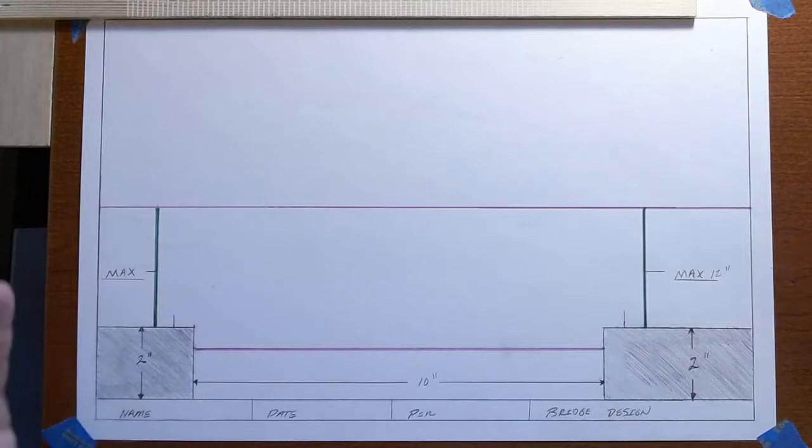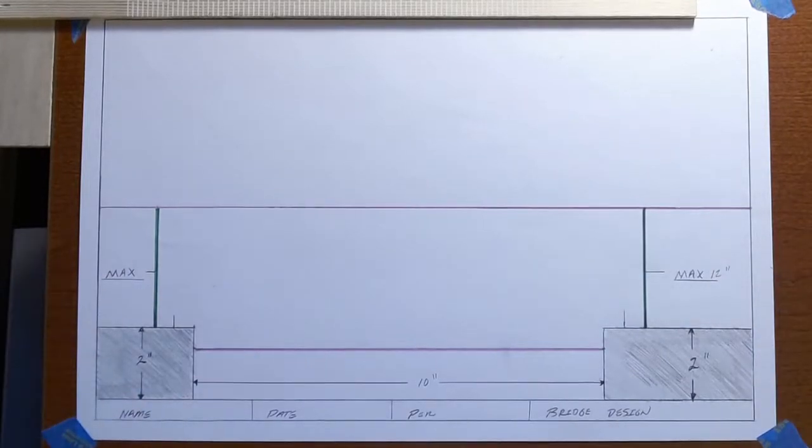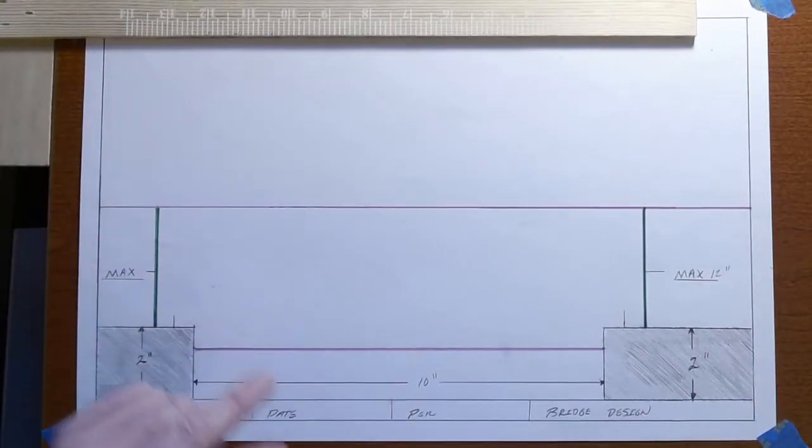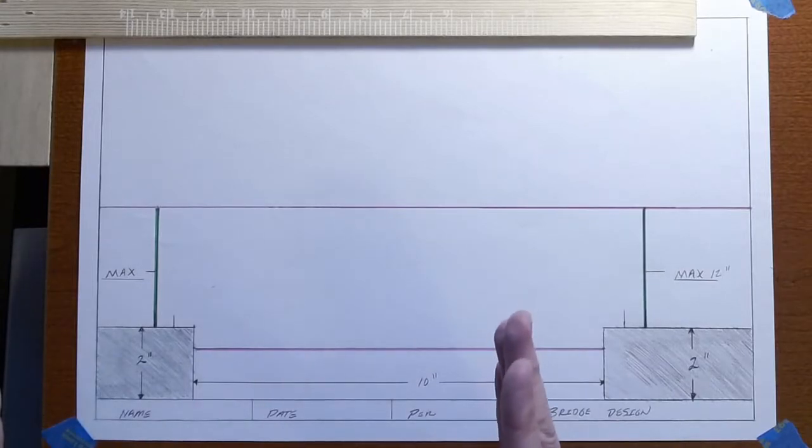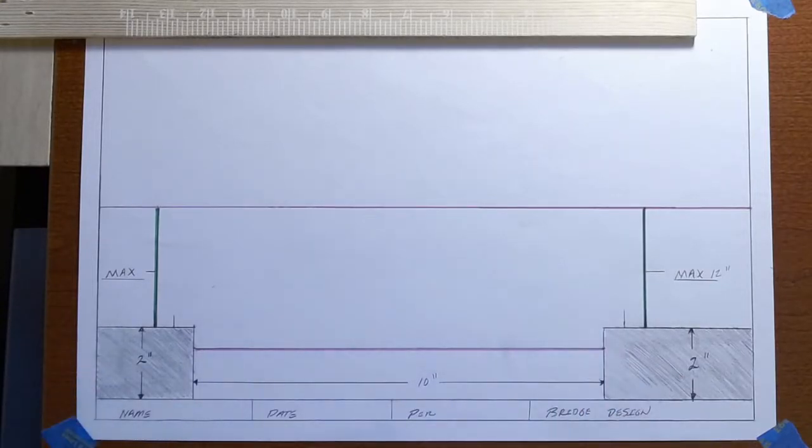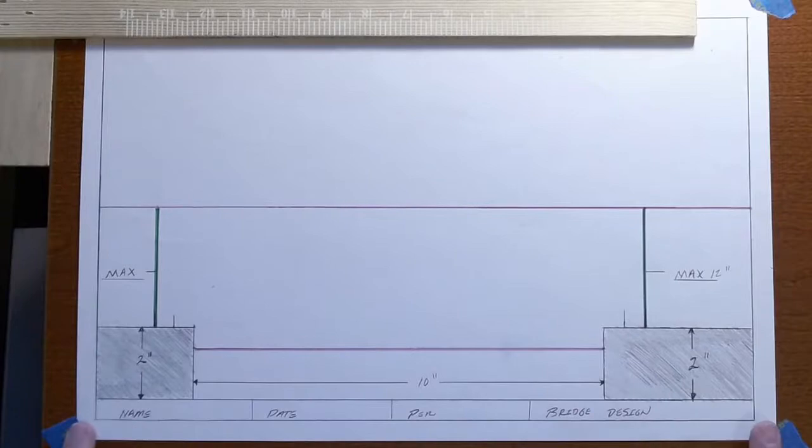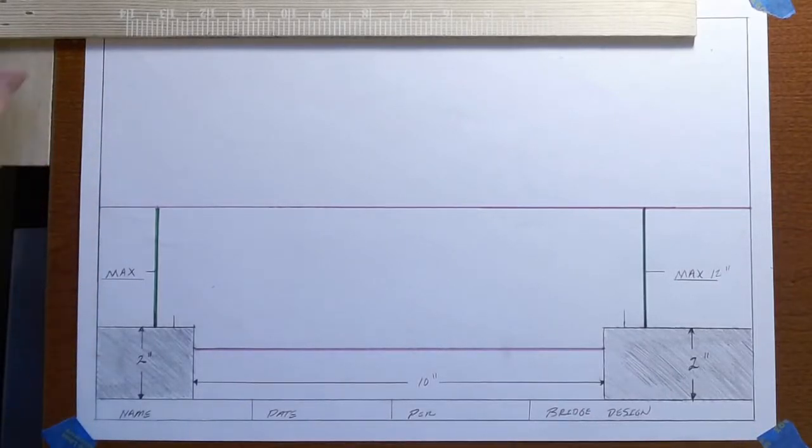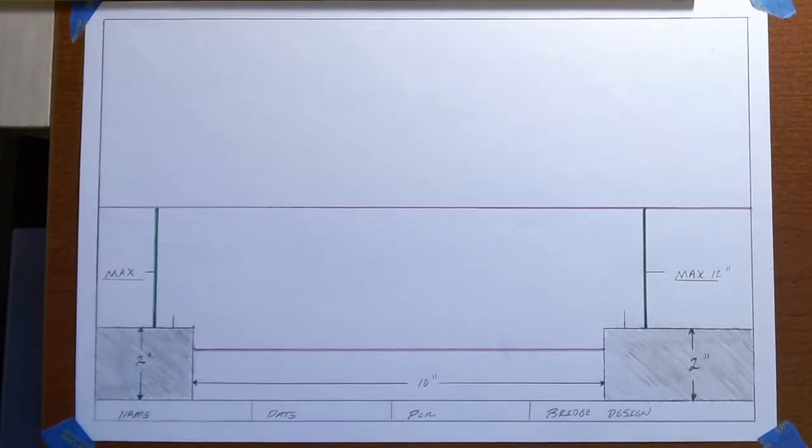What I've got here is a really large piece of paper. This is not standard printer paper - this is the big paper I gave you. It is 17 inches this way and 11 inches this way, so it's twice as big as a piece of printer paper. We need that big piece to hold your bridge.